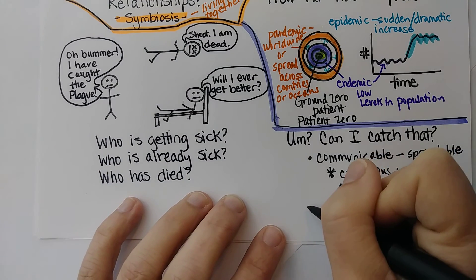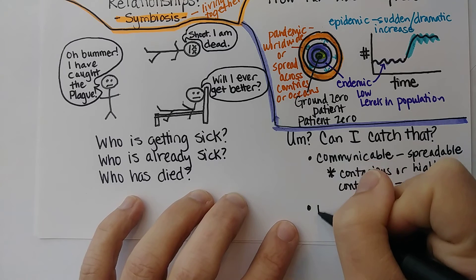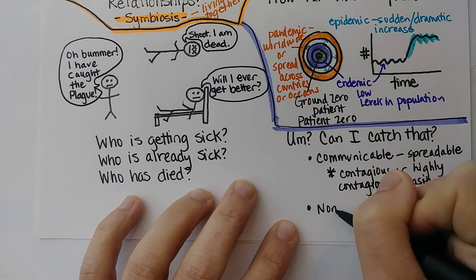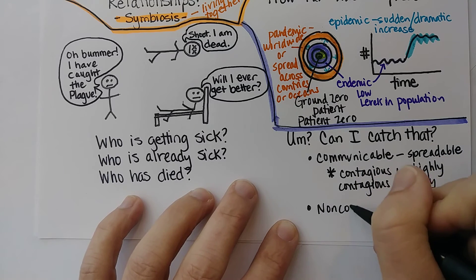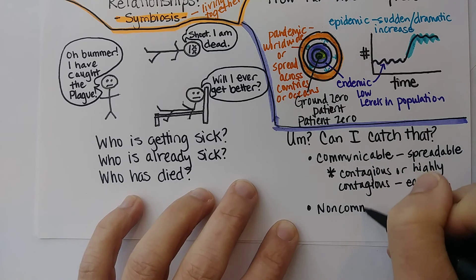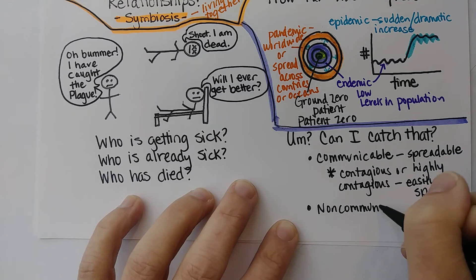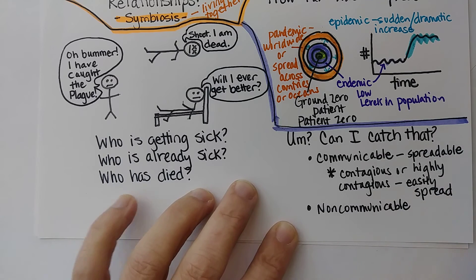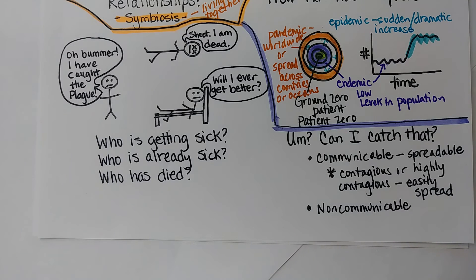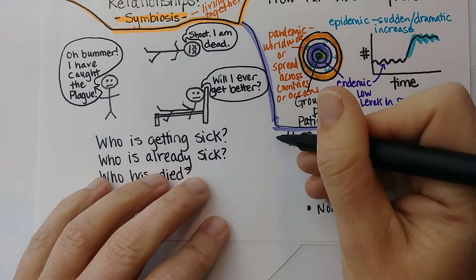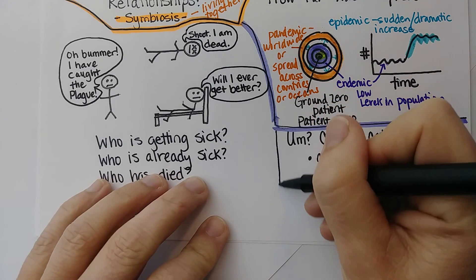Some diseases are described as non-communicable. A good example would be rheumatoid arthritis or lupus — basically any autoimmune disease would be considered non-communicable.